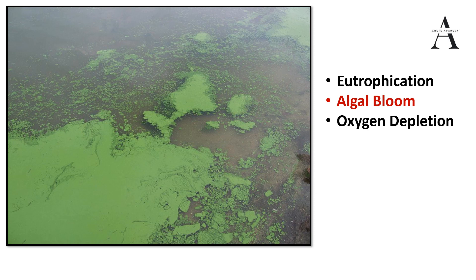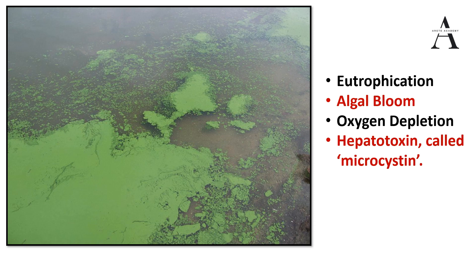Because of the film on the water surface, oxygen depletion is happening and water clarity is reduced. These algae produce hepatotoxins called microcystin. When produced in high concentration, they can be fatal to fish, humans, birds, and other aquatic microorganisms. That's why algal bloom is a threat to the water body and to the ecosystem overall.